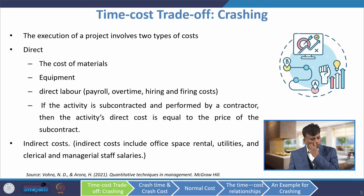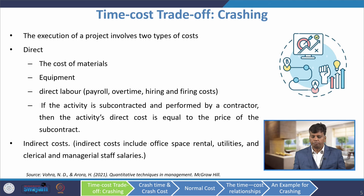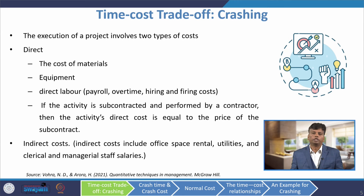The execution of a project involves two types of cost: one is direct cost and another is indirect cost. Direct cost directly affects the project duration — for example, cost of materials, equipment, and direct labor cost. Sometimes if the activity is subcontracted, the direct cost equals the price of the subcontract. Indirect cost includes office space, rental utilities, and clerical and managerial staff salaries, and does not directly affect the project duration.